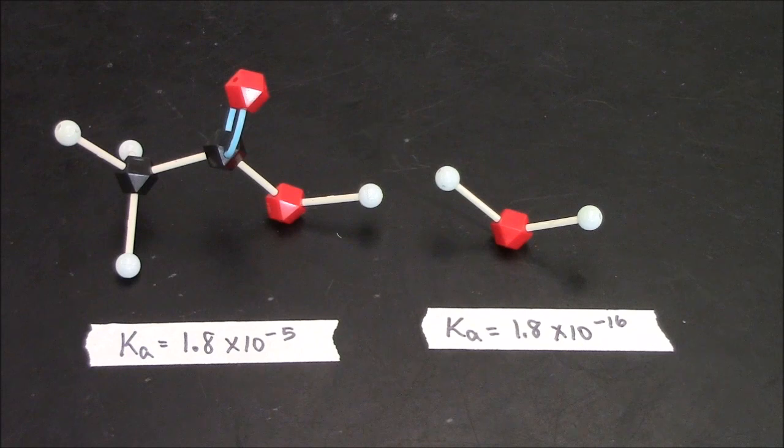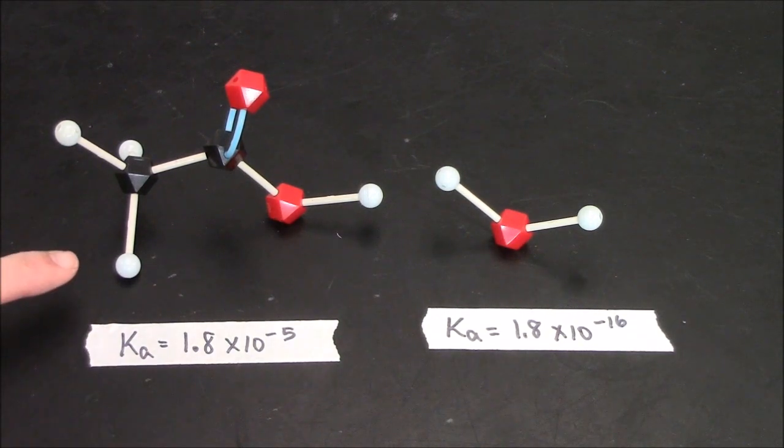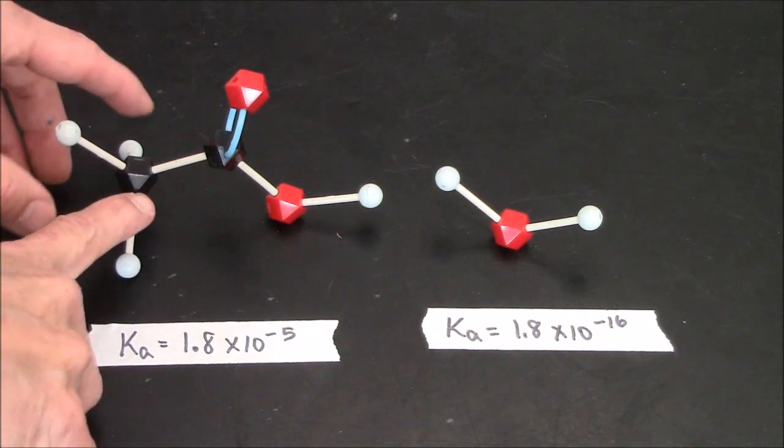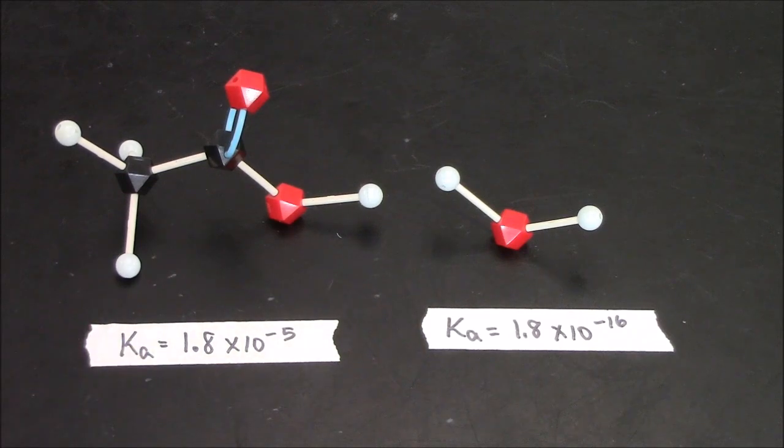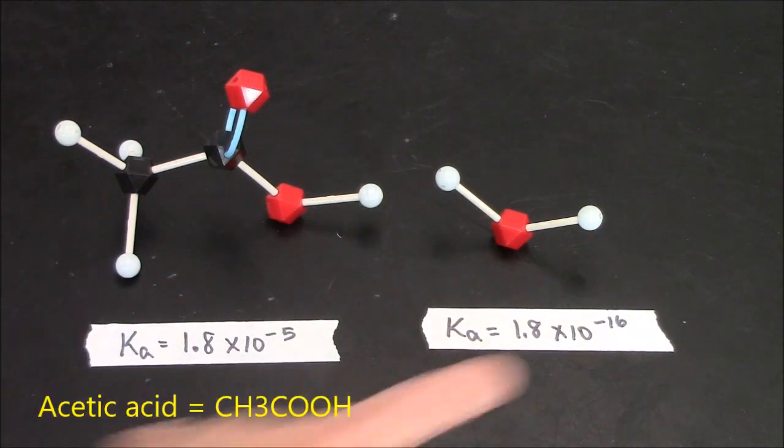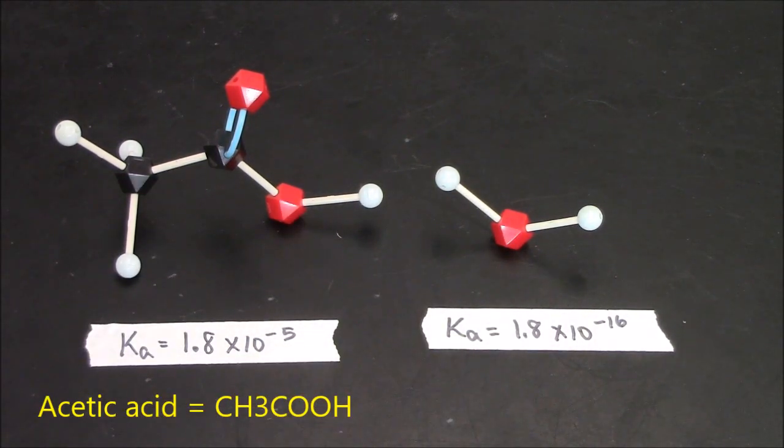This lesson will ask you to think about acid strengths measured by Ka. This is acetic acid. It has a Ka. This is water. It has a much, much smaller Ka. Water is much less likely to be dissociated.